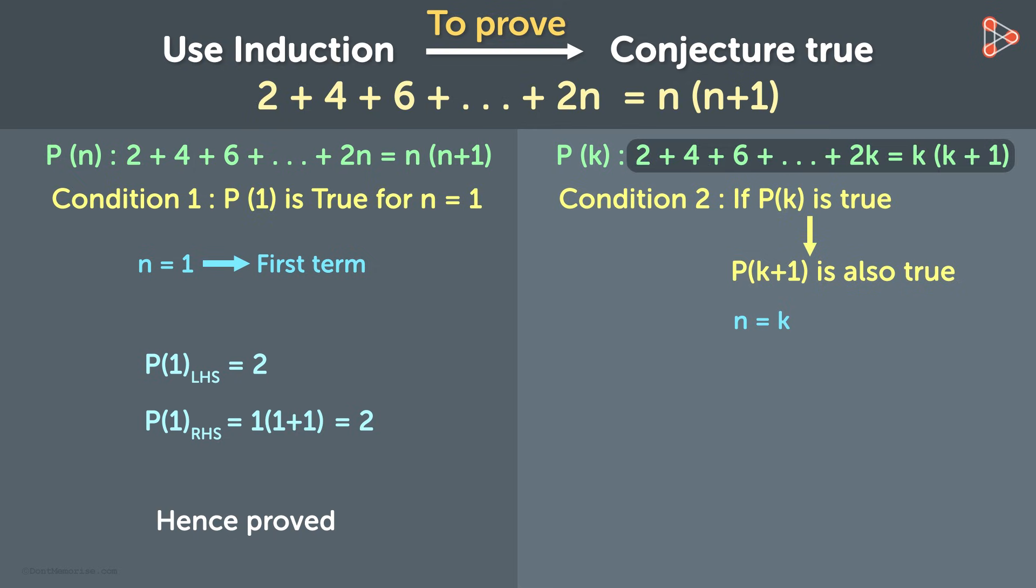The left hand side of P of k plus 1 is 2 plus 4 plus 6 up to 2k plus 2 multiplied by k plus 1. How do we simplify this? Look at this part. We have already seen that this is equal to k multiplied by k plus 1. So we replace this part with k times k plus 1. We see that the part k plus 1 is common to both the terms. Hence this can be simplified to k plus 1 times k plus 2.